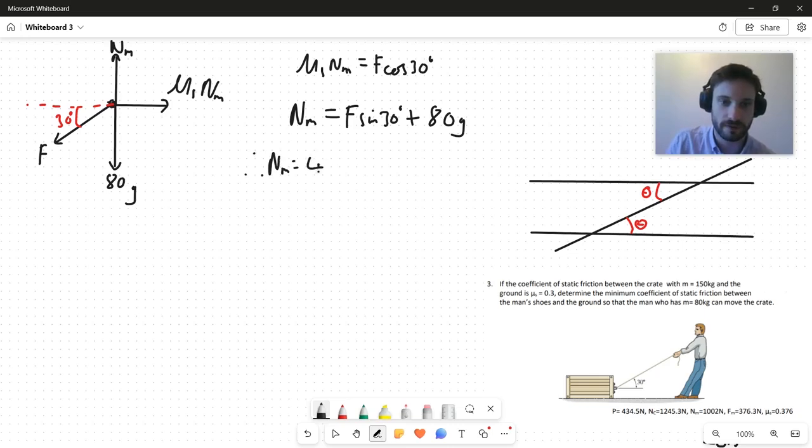Things moving up: Nm. Things moving down: F sin 30 plus 80g. Is this solvable? Yes, because we know F. So we can say then, therefore Nm is equal to 434 sin 30 plus 80g. And when I put that in my calculator, I find that Nm is equal to 1001 newtons.